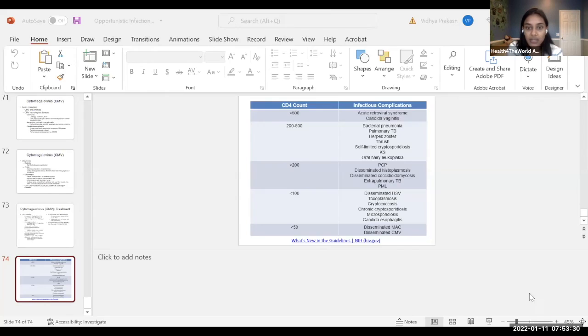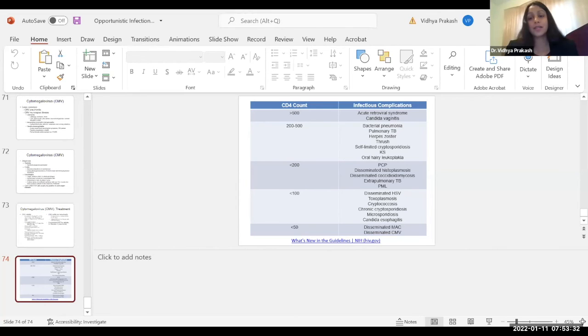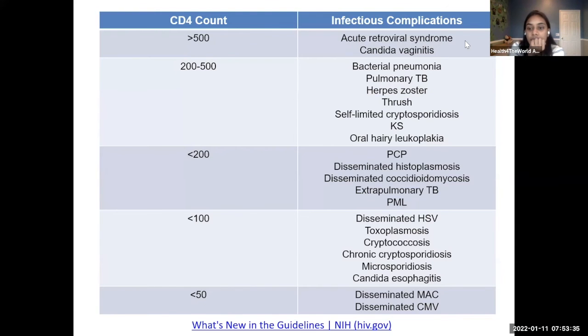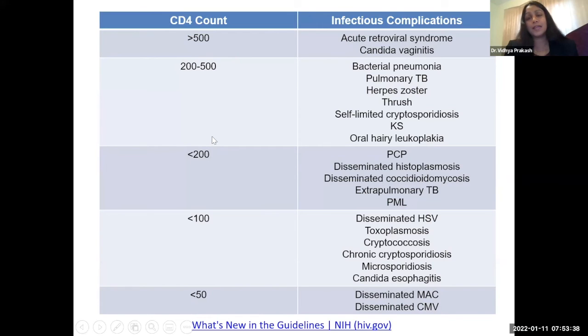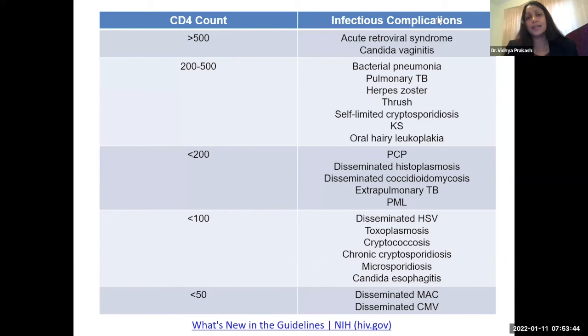If there are any other questions, you can unmute or put them in the chat. I'm going to share this last screen again just to tie it all together — this chart is very helpful in narrowing your differential diagnosis, and here is the link to the opportunistic infection guidelines.